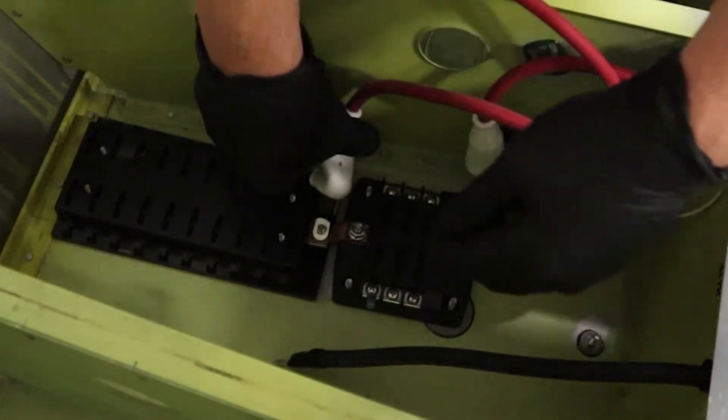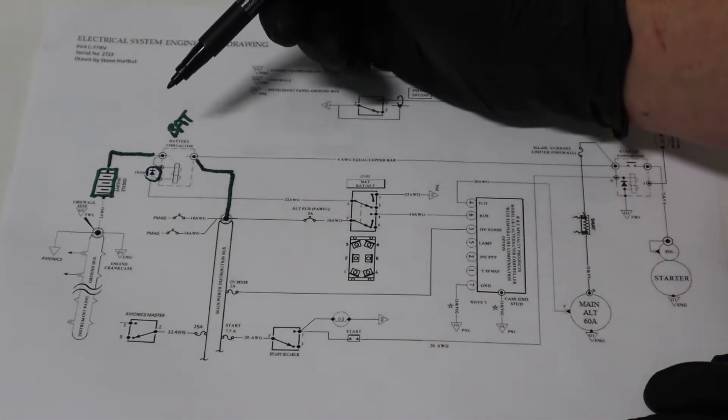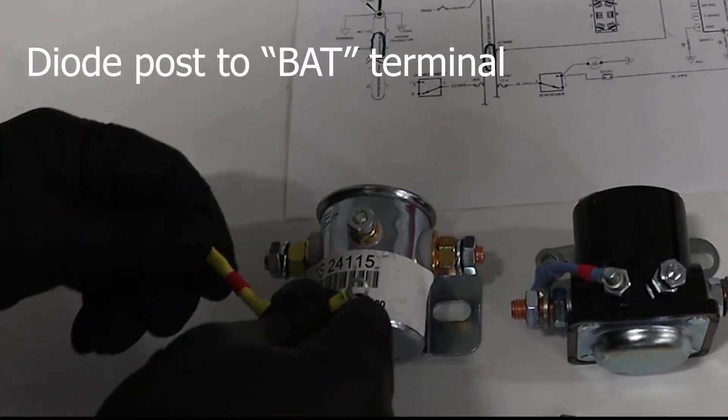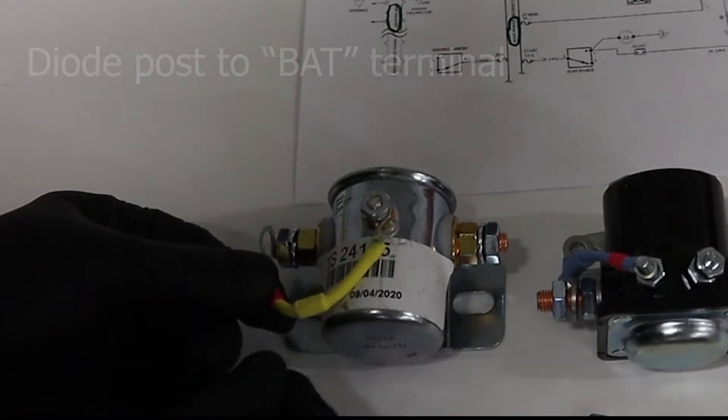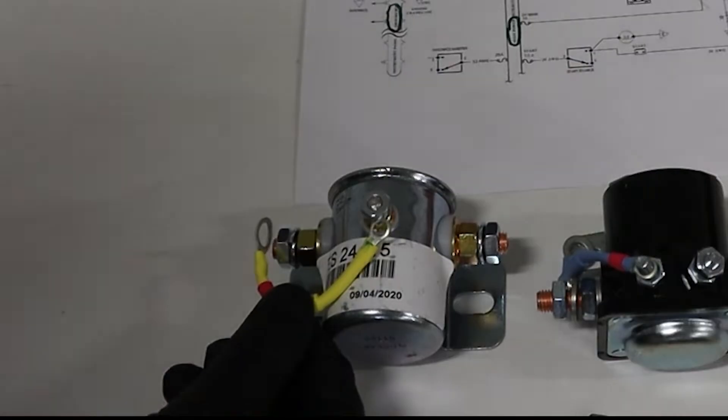Leave the battery terminal disconnected while you're doing all this, so you don't accidentally spark something. Alright, let's look at the master relay for a sec. It's going to have a diode on it. The diode is going to go from the post to the battery terminal. And this prevents, when you're turning the switch off, it prevents a spark from eventually causing the switch to fail. So you'll see diodes in all of these relays.